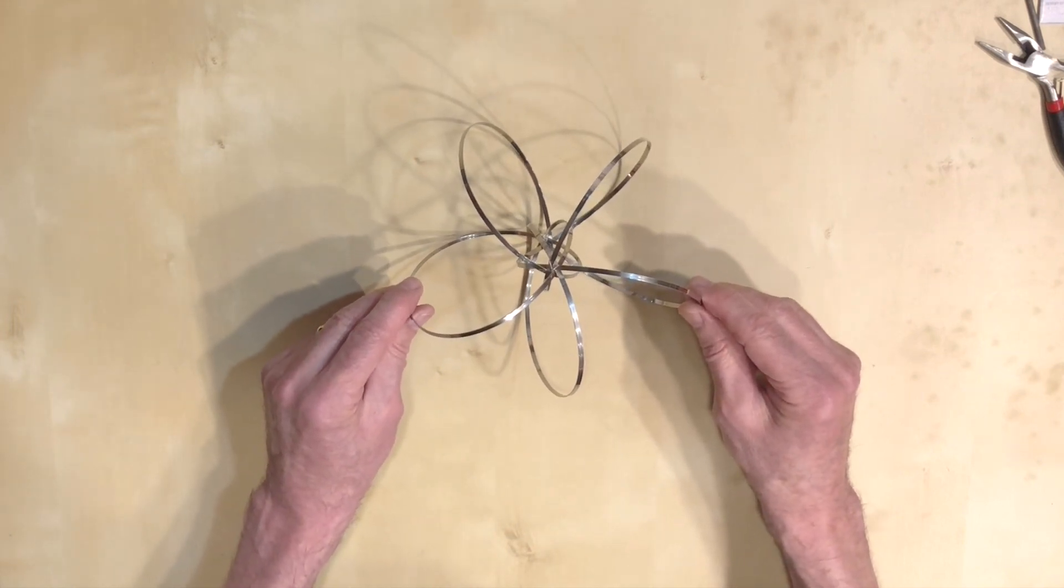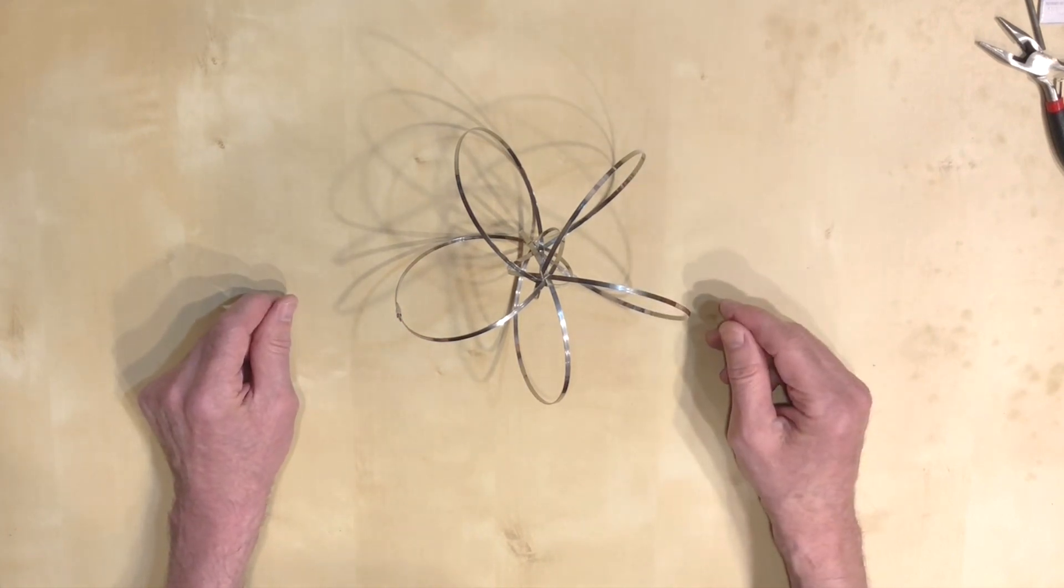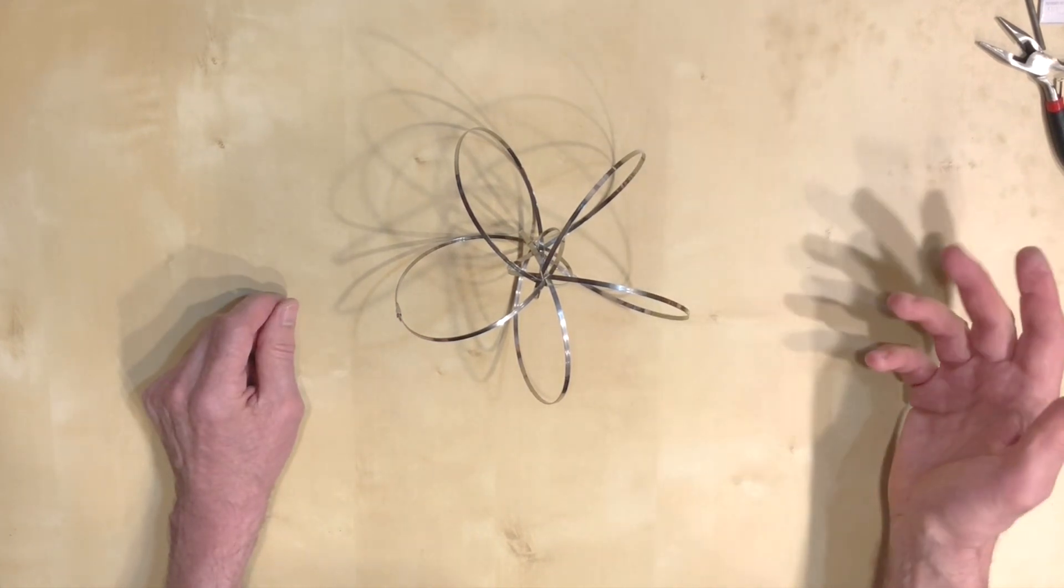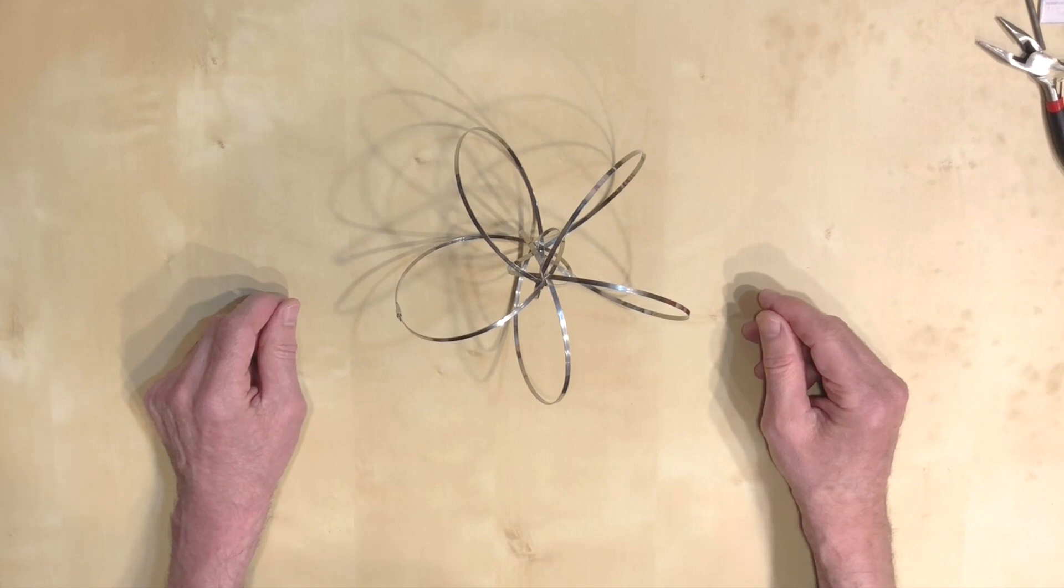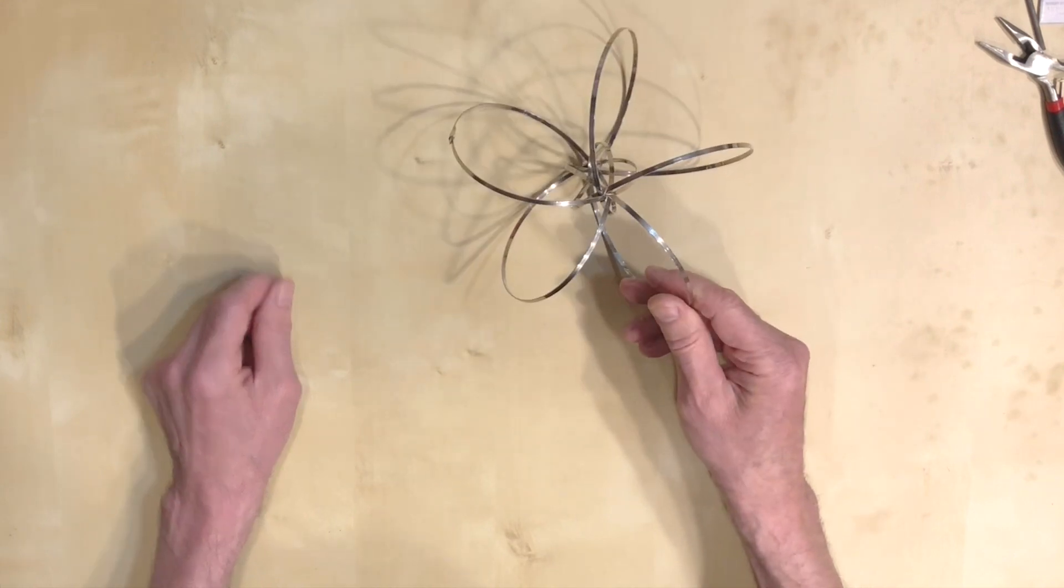The method that I just showed you will always produce a torus knot, an n, n+1 torus knot - one of the parameters is one more than the other. This works because n and n+1 are always co-prime.